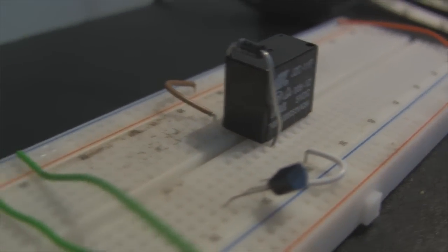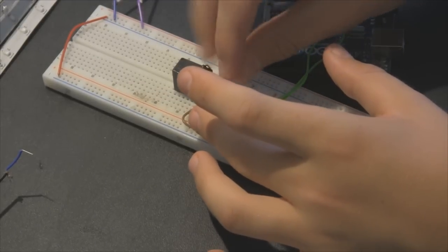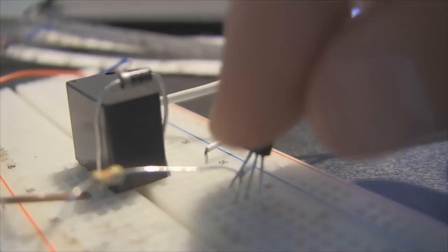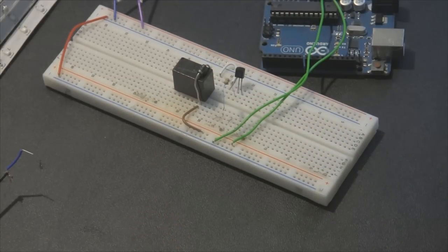Now you want to take your 330 ohm resistor and plug it into the center of your transistor just like that. So you want to plug it into the base and just leave it hanging.